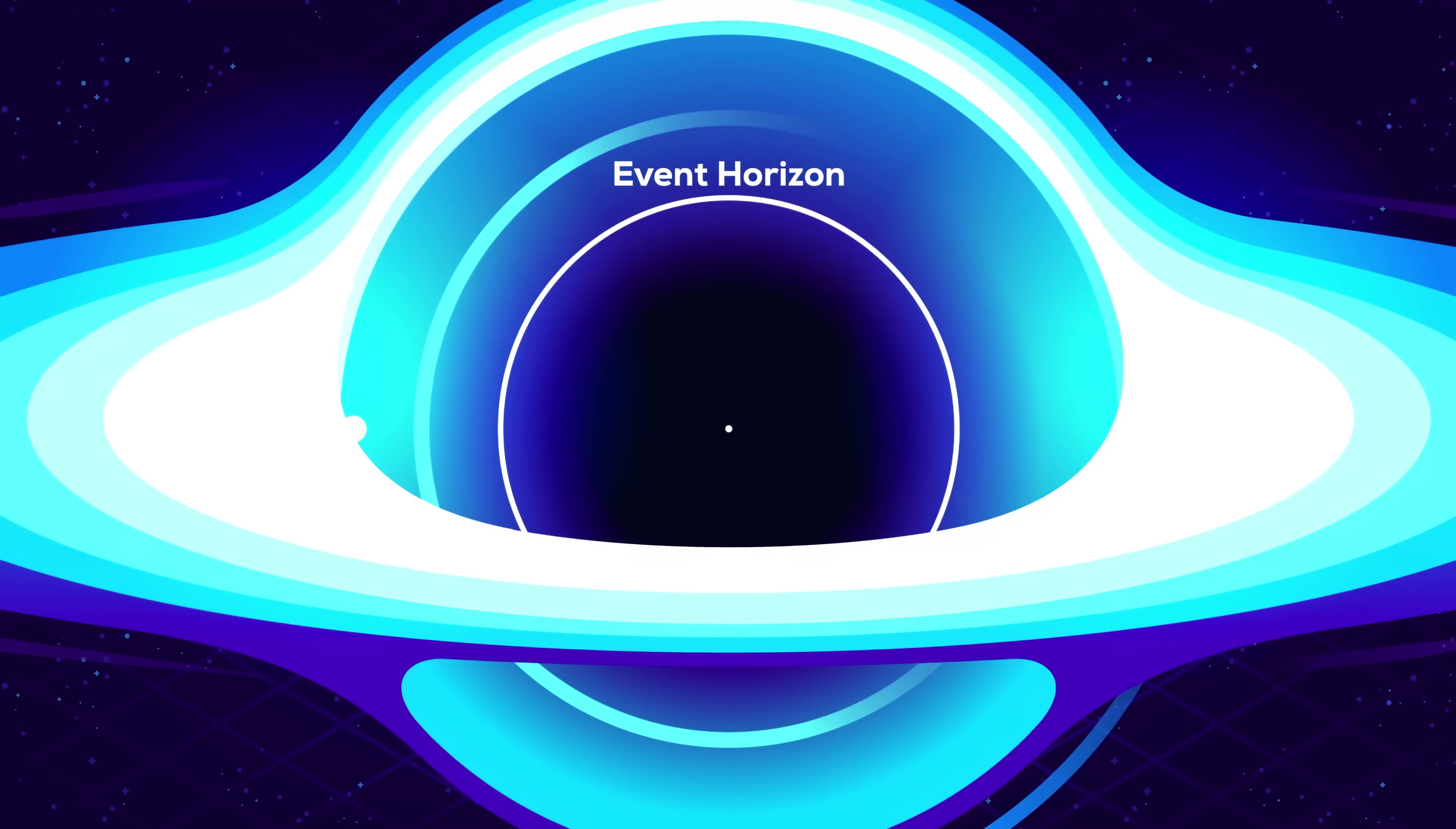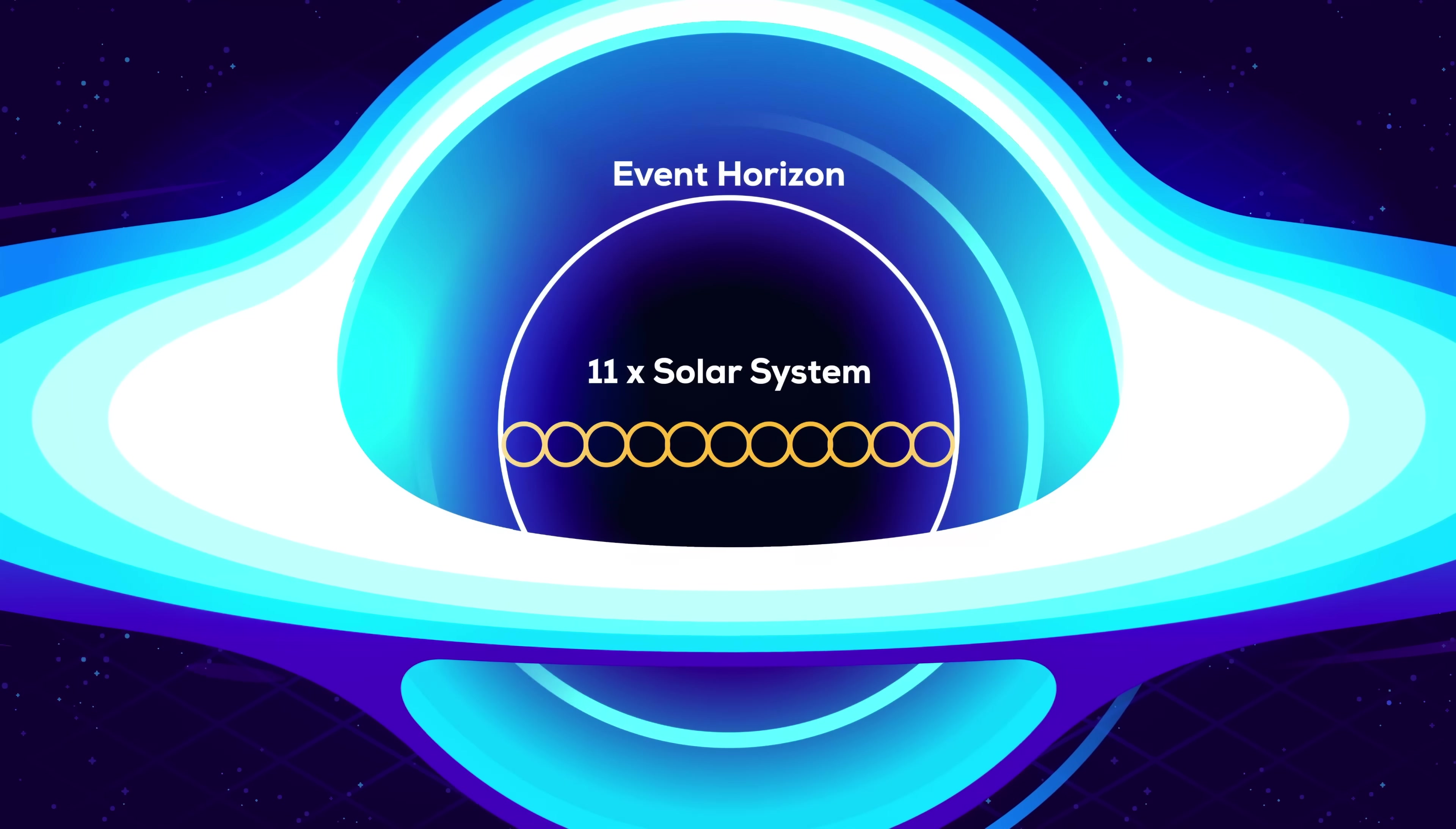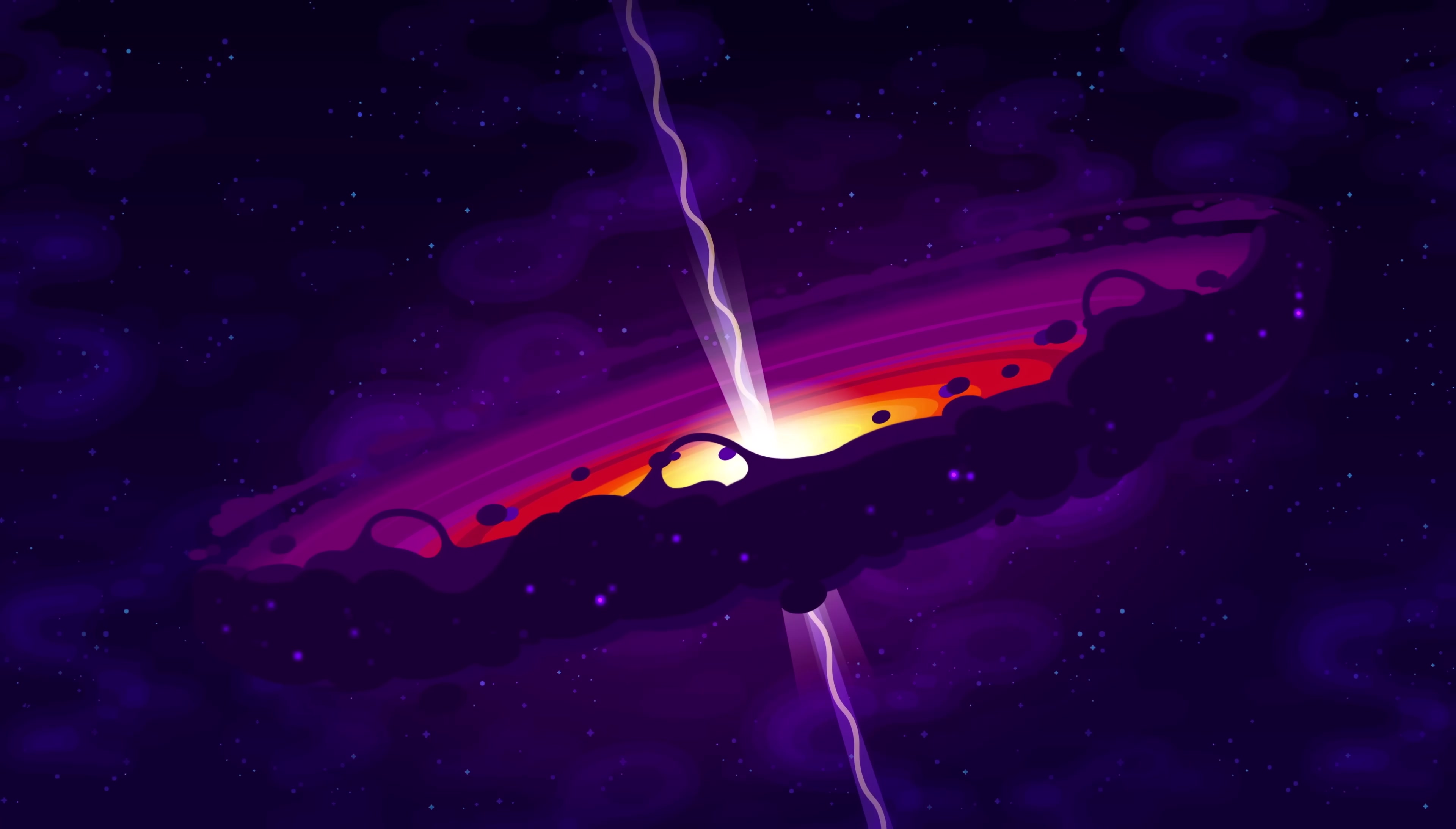A black hole so large that it would take light a week to reach the singularity after crossing the event horizon. About 11 solar systems could sit inside of it, side by side. It may very well be the largest single body in the universe, but in reality, it's probably even larger.